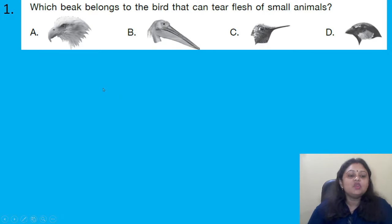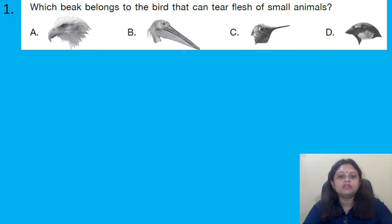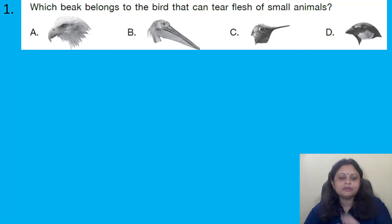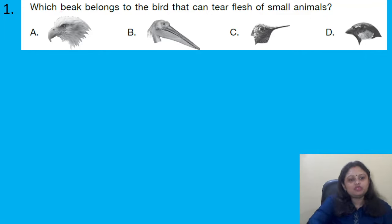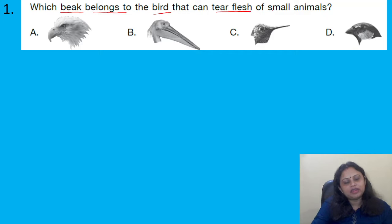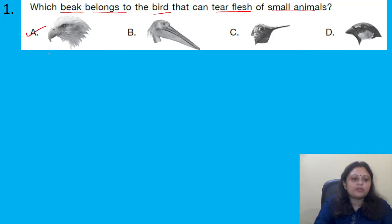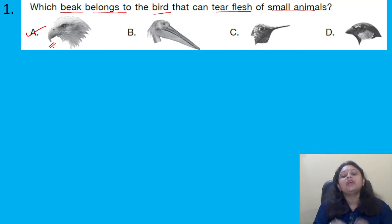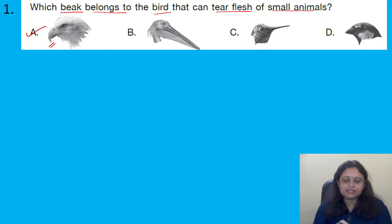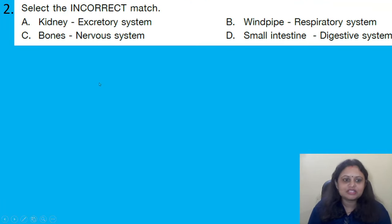Our first question: which beak belongs to the bird that can tear flesh of small animals? In options A, B, C, and D, four beaks have been given. We have to find out which beak belongs to the bird that can tear flesh of small animals. The correct answer is option A. This type of beak helps the birds to tear the flesh of animals.